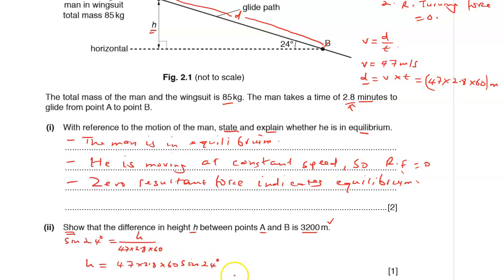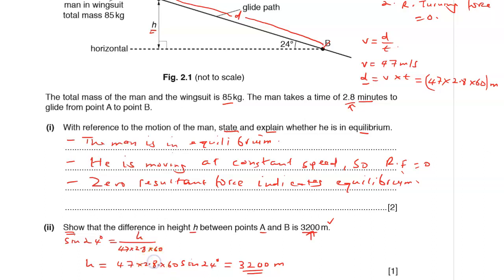You can use your calculator to confirm this. Don't try to deceive the examiner by skipping your working and just writing 3200 at the end — the examiners always follow your working. So show all your steps and you will earn that mark.